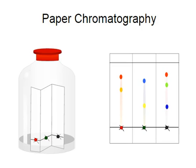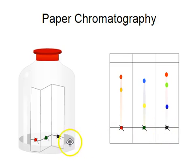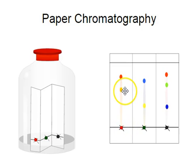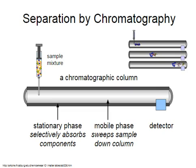In our paper chromatography lab, we put a dot of ink on a piece of paper and place it into a solvent — the solvent could be water or something like alcohol. Depending on the solubility of the material, the paper wicks up the solvent, which travels up the paper, dissolves the solute, and the solute comes out of solution and separates onto the piece of paper. Paper chromatography is a nice easy way to separate mixtures.